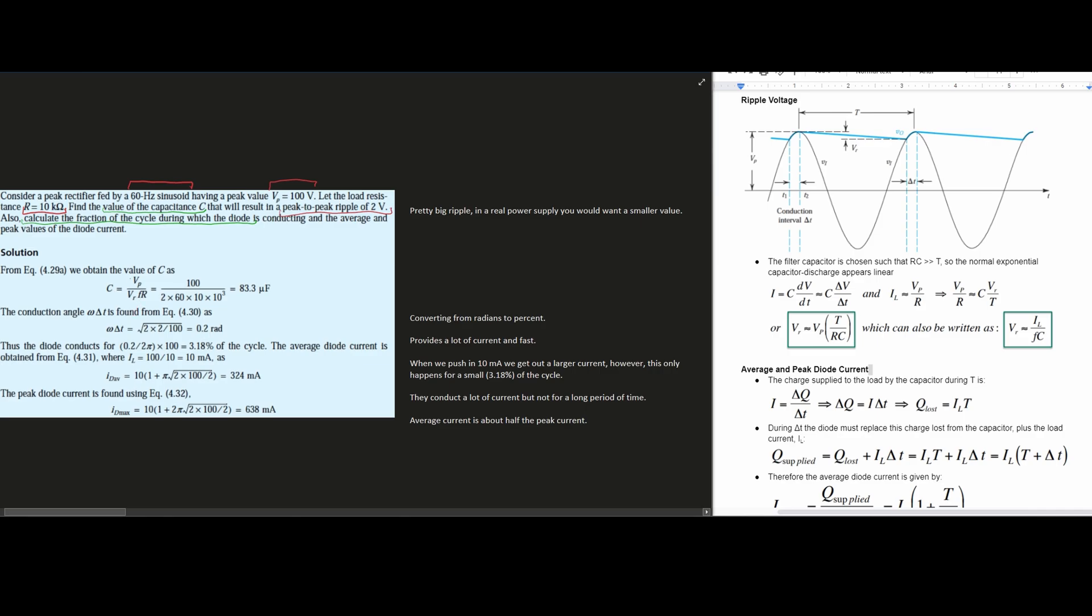Notice how we have our C right here, our Vp up top, our Vr here, and our R right here. Now we have an F here, and this F is really our T. Remember that F is just equal to 1 over T. Frequency is 1 over our period.